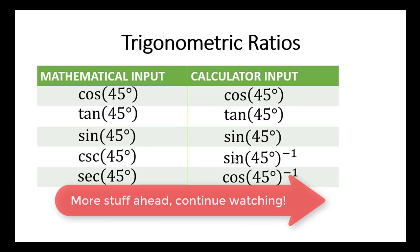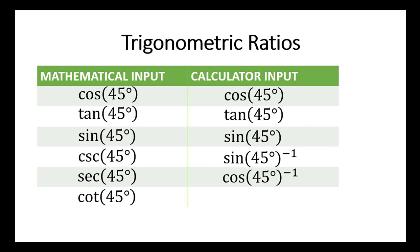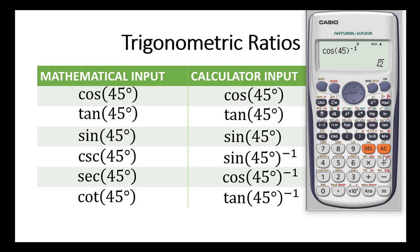Let's proceed to the last one: cotangent of 45 degrees, or cot 45 degrees. Remember, cotangent is simply the reciprocal of the tan ratio. So you simply press tan 45, close the bracket, to the exponent negative 1. Let me press the all-clear key, then press tan 45, close the bracket, and then to the exponent negative 1. Press equal to — we also get 1. Remember, tan 45 was 1 and the reciprocal of 1 is still 1.